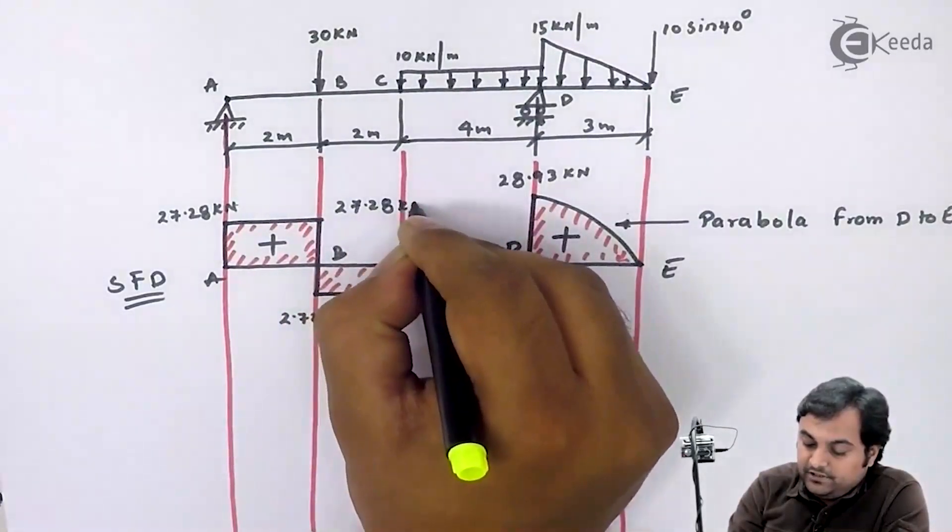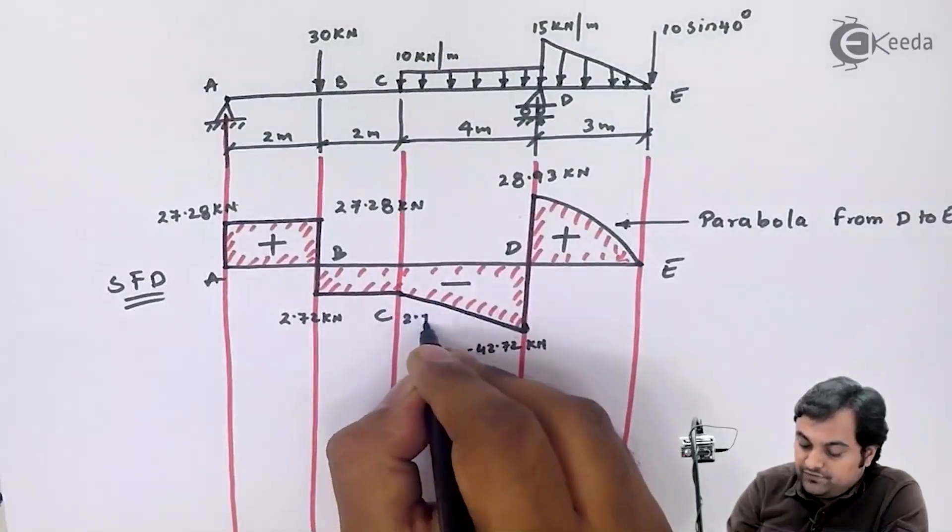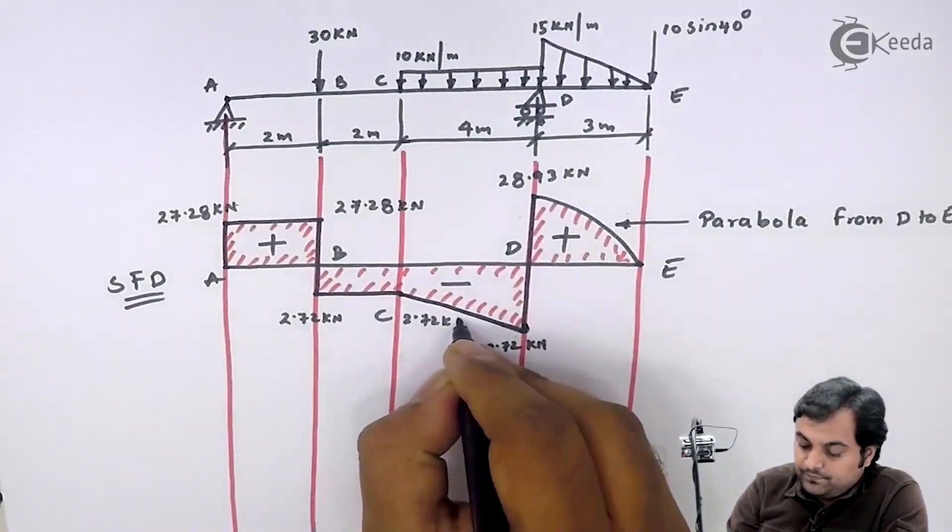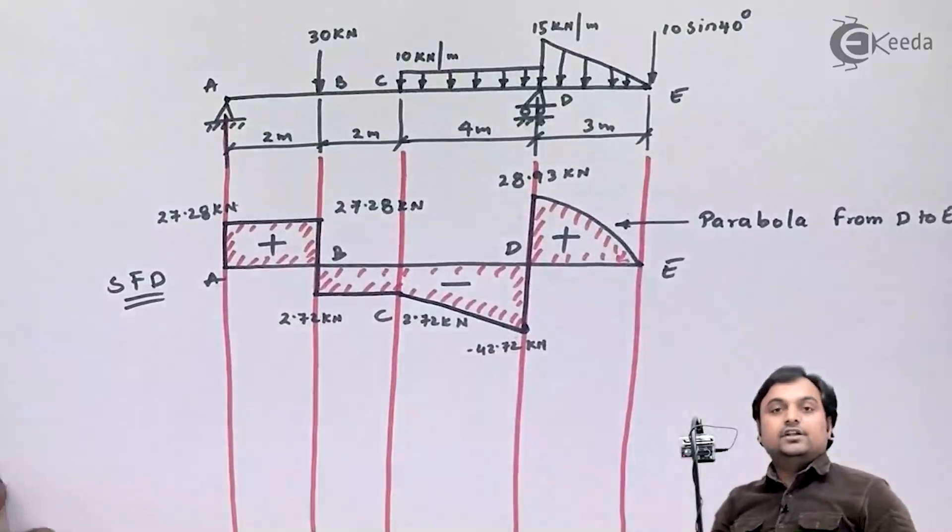And similarly between B to C we have constant shear force. Now this is the shear force diagram.